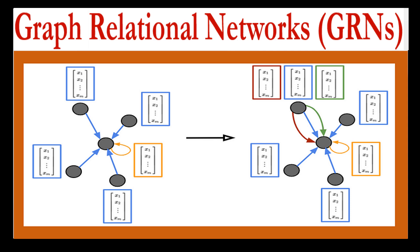Then comes graph relational networks, or GRNs. Graph relational networks are a type of machine learning algorithm used for processing graph-structured data. They are similar to GATs and GCNs, but use a different approach to analyze the relations between nodes in a graph. In simple terms, GRNs analyze relations between nodes by learning patterns based on the features of the nodes and edges connecting them. For example, imagine you are a financial analyst trying to analyze the relations between different companies in a particular industry, with data on their financial statements such as revenue, expenses, and assets. You can use a GRN to learn the relations between the companies based on their financial statements and other relevant features.